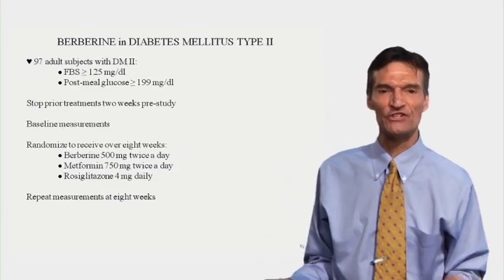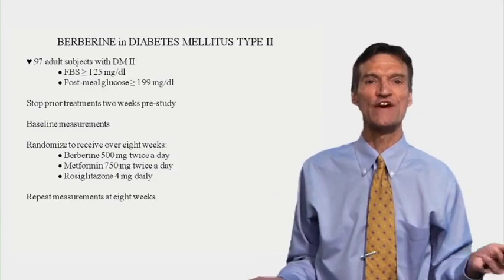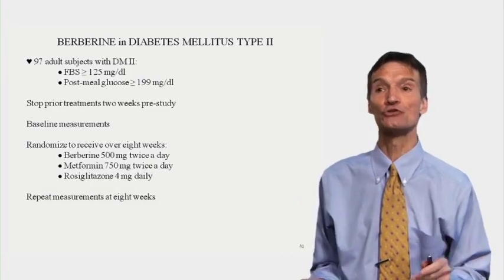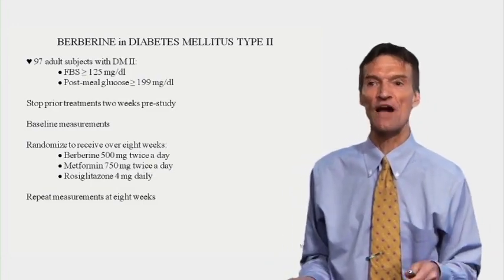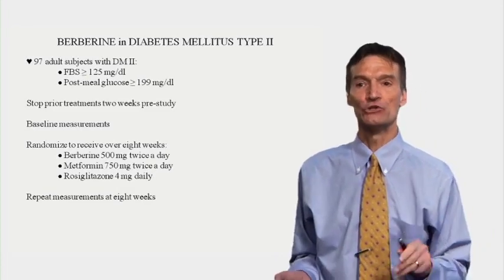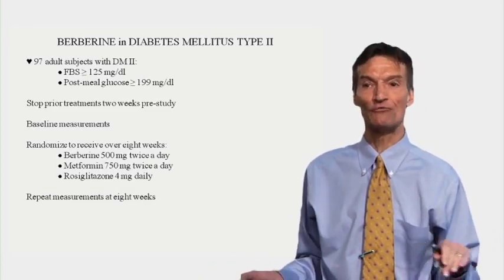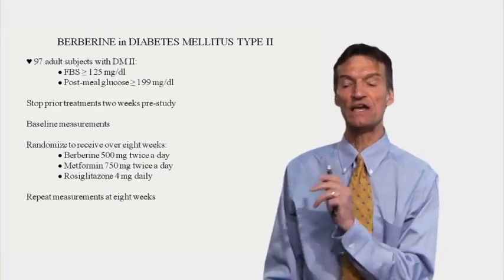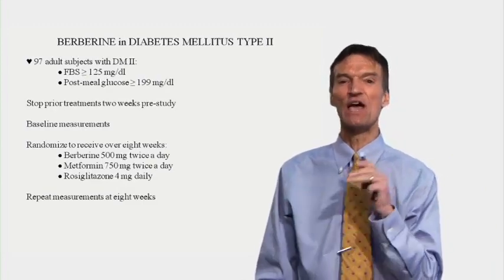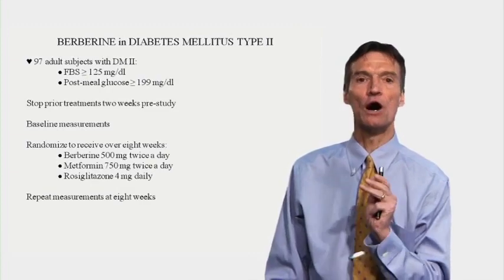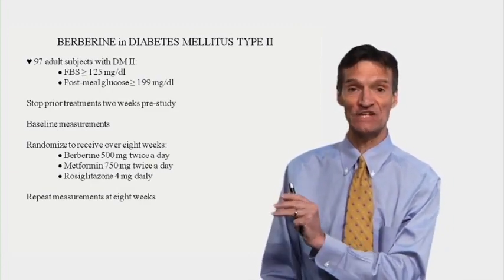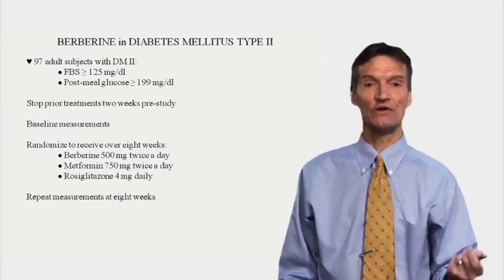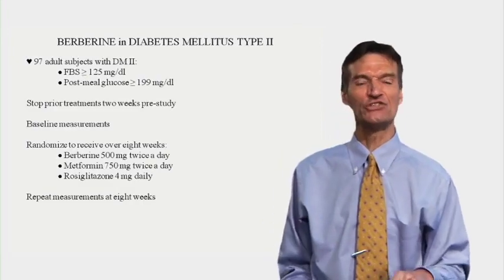Let's present another clinical trial of berberine in adults with type 2 diabetes. 97 adults with type 2 diabetes — fasting sugar above 125, post-meal glucose around 200 or above — with all prior drug treatments stopped two weeks before. Randomized over 8 weeks to: berberine 500 mg twice daily, metformin 750 mg twice daily (which, like berberine, upregulates AMPK activity and improves insulin sensitivity), or rosiglitazone — a thiazolidinedione (trade name Actos) — an insulin sensitizer that works by transferring fat from muscle into belly fat, improving insulin sensitivity while causing belly fat gain.